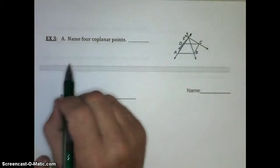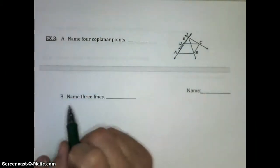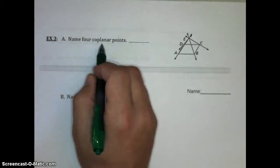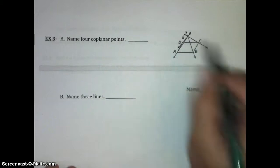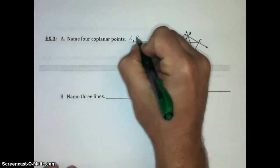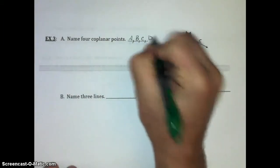We need to first name four coplanar points. Coplanar means they're all on the same plane. The only plane that has all four points listed is this base here, A, B, C, D. So we're just going to list A, B, C, and D.